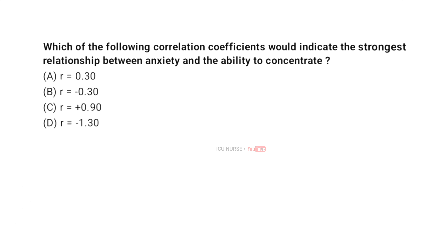Which of the following correlation coefficients would indicate the strongest relationship between anxiety and the ability to concentrate? A: R is equal to 0.30. B: R is equal to minus 0.30. C: R is equal to plus 0.90. D: R is equal to minus 1.30.